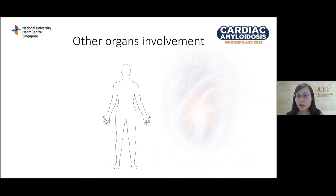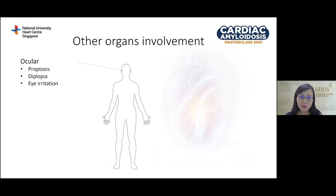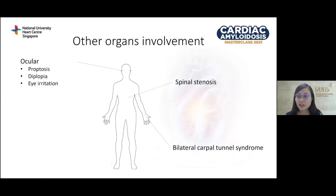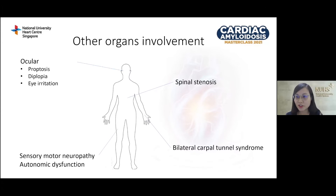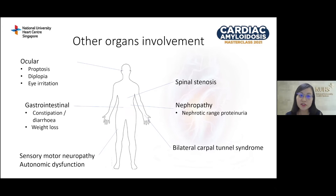Aside from the heart, amyloid fibrils can also be deposited elsewhere in the body. Ocular involvement can occur, with fibrils deposited in any part of the eyes, causing ptosis, diplopia, and eye irritation. Deposition in the wrist can cause compression of the median nerve, leading to carpal tunnel syndrome, often bilateral. Deposition into the ligamentum flavum leads to spinal stenosis. Nervous system involvement can cause sensory-motor neuropathy and autonomic dysfunction. Kidney involvement leads to nephrotic-range proteinuria, and gastrointestinal involvement can cause constipation, diarrhoea, nausea, and weight loss.